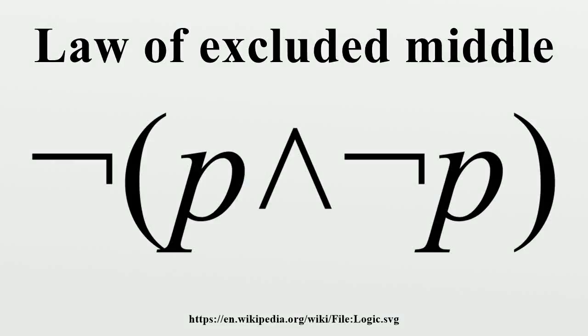In logic, the law of excluded middle is the third of the three classic laws of thought. It states that for any proposition, either that proposition is true, or its negation is true. The law is also known as the law of the excluded third, in Latin principium tertiae exclusii. Yet another Latin designation for this law is tertium non-data.